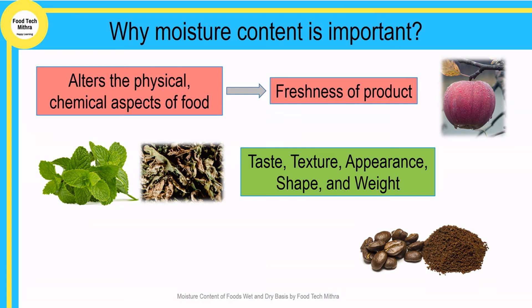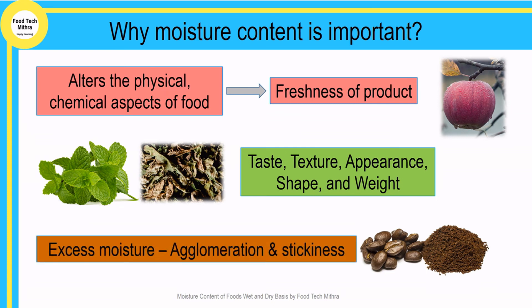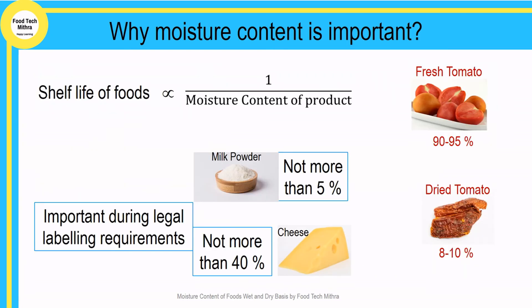For example, in green leafy vegetables or fresh mint leaves, moisture content gives the product its fresh appearance; the product looks wilted if moisture is lost. To maintain consistent quality, moisture content should be ensured throughout. Excess moisture in some products may cause food material to agglomerate, become trapped in production pipelines, or get stuck to equipment walls — a best example being coffee powder.